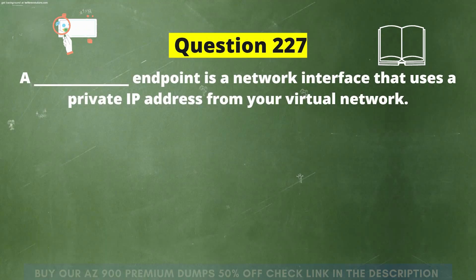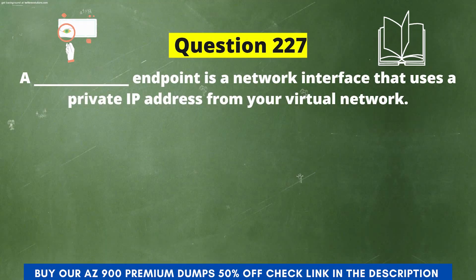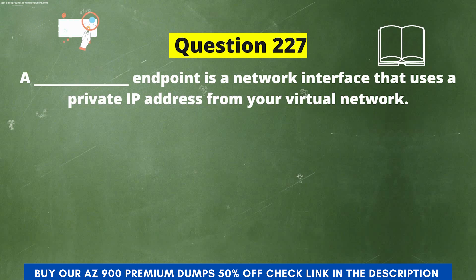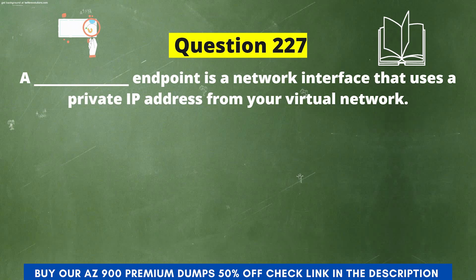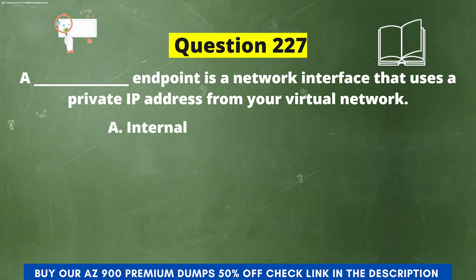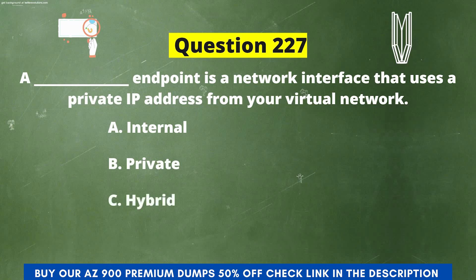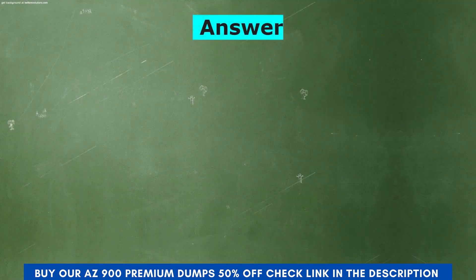Question 227: A dash endpoint is a network interface that uses a private IP address from your virtual network. The options are: A) Internal, B) Private, C) Hybrid, D) Public. The correct answer is option B, Private.